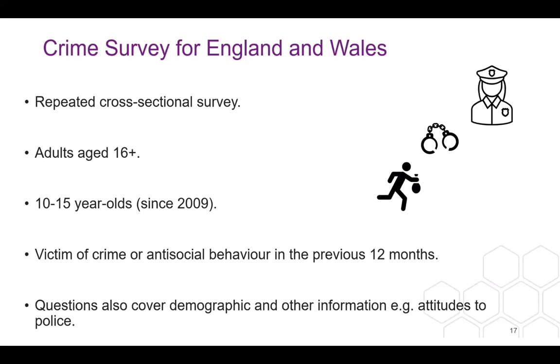Looking at the Crime Survey for England and Wales in more detail: it is an example of a repeated cross-sectional survey used to look at aggregate population changes over time. It samples those aged 16 and above, but since 2009 a smaller sample for those between 10 and 15 years of age was added. The survey collects information on whether participants have been victims of crime or antisocial behaviour in the last 12 months, and also covers topics such as demographics and participants' attitudes towards the police or the criminal justice system as a whole.